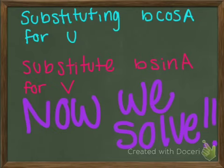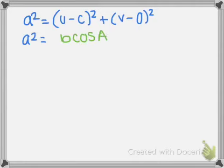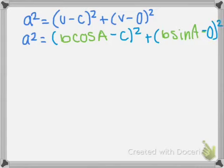And now we solve. So here's our distance formula. Now we're going to, like Megan said, substitute the values for v and u into the distance formula to get a squared equals b cosine A minus c squared plus b sine A minus 0 squared.